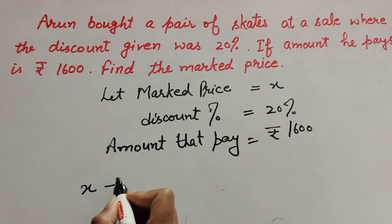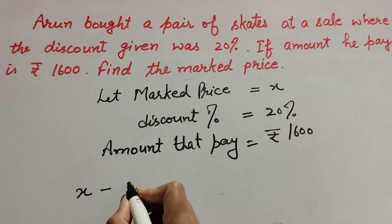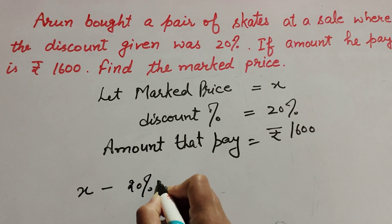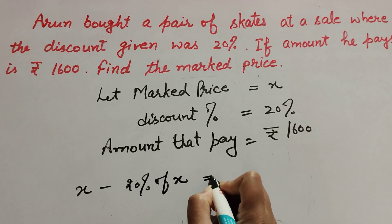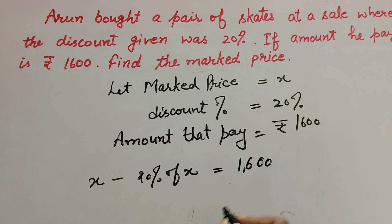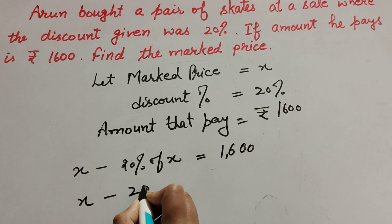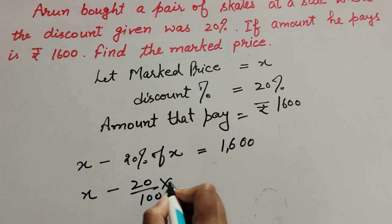We know discount is provided on the marked price, so 20% of x. The equation is: marked price x minus 20% discount equals 1600. So x minus 20% equals x minus (20/100) times x equals...